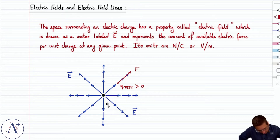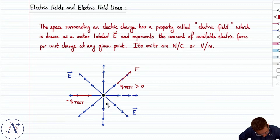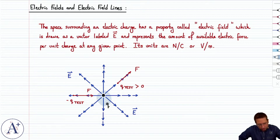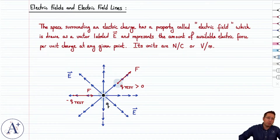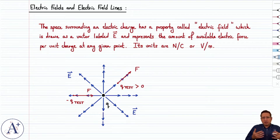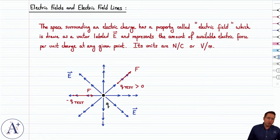If you have a negative test charge, minus Q-test, the direction of the force is going to be flipped. This makes sense because a positive point charge Q will repel a positive test charge Q-test, whereas it will attract a negative test charge minus Q-test. So as far as direction goes, that makes sense.